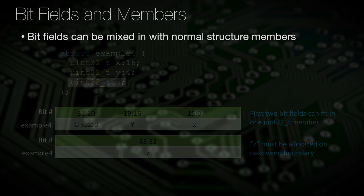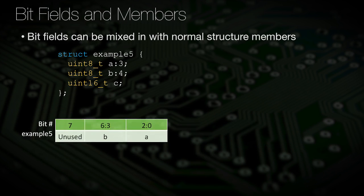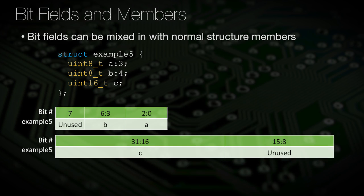For example, say you defined two bitfields as uint8 and used seven of the possible eight bits. Then you followed that up with a uint16 member definition with no bitfields. This will require the compiler to allocate three to four bytes depending on whether the structure is packed or aligned.